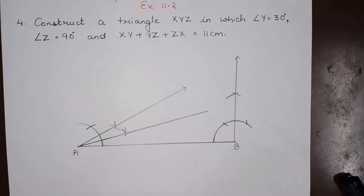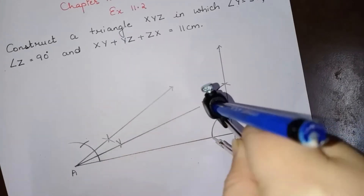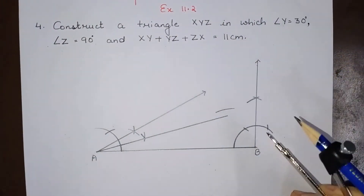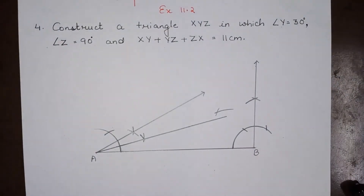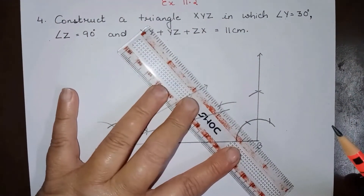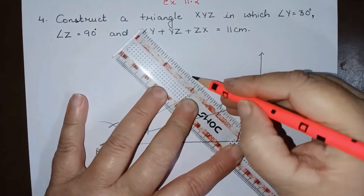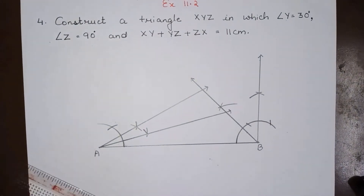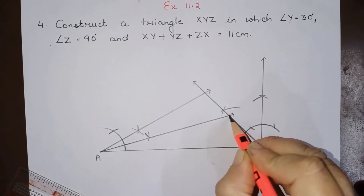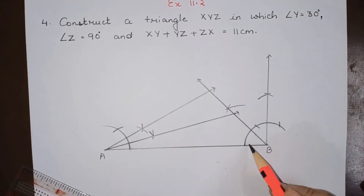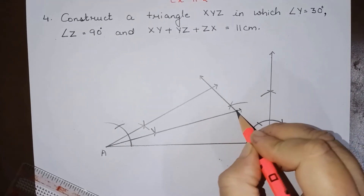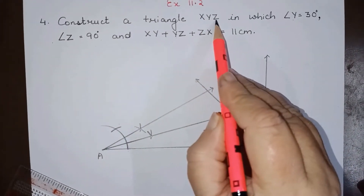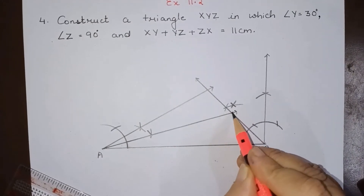Now let us bisect the 90-degree angle at B as well. We draw arcs and bisect it accordingly. So the bisectors of both angles have been drawn. Where the bisector of the 30-degree angle and the bisector of the 90-degree angle meet, we name that point X. That is one of the three vertices of triangle XYZ — in this way we have got vertex X.